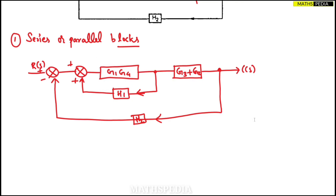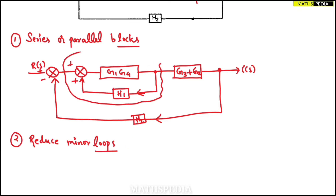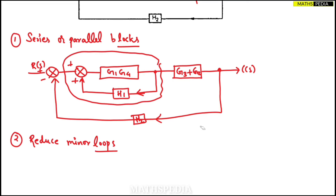Now the second step: we have to look for any minor loops or internal loops and reduce them. Inside this block, a particular part forms one minor loop. To identify a minor loop: it has a starting point and an ending point where a feedback comes back. We handle the minor loop first — solve inside parts before going to the outside, smaller loops before bigger ones.